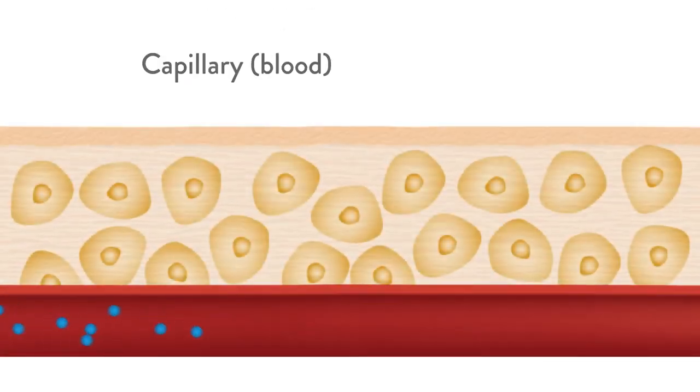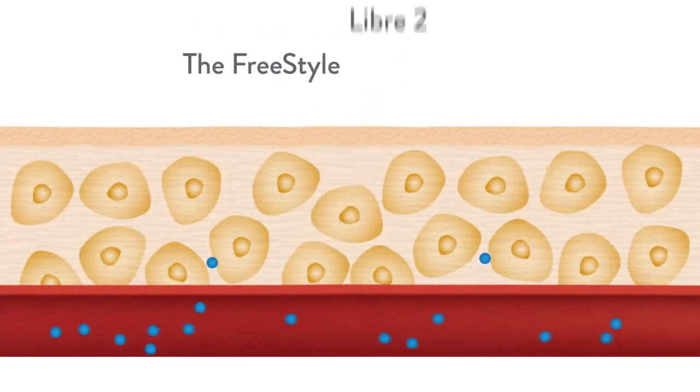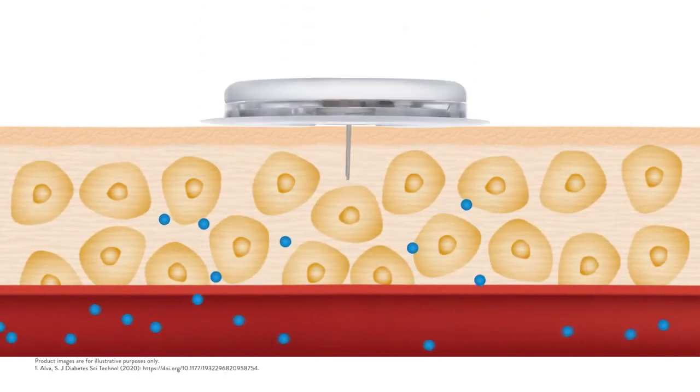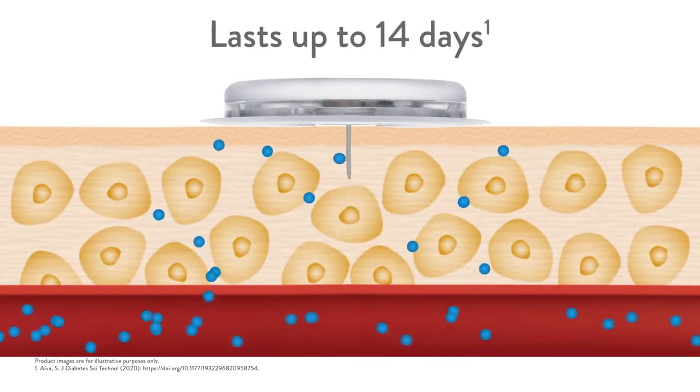With blood glucose monitoring, a lancet is inserted with pressure to reach the blood in the capillary. With the Freestyle Libre 2 system, the sensor uses a filament inserted just under the skin where it floats in the interstitial fluid.